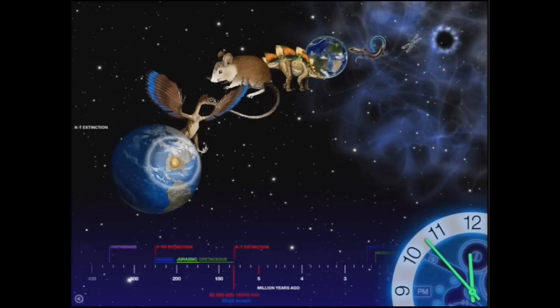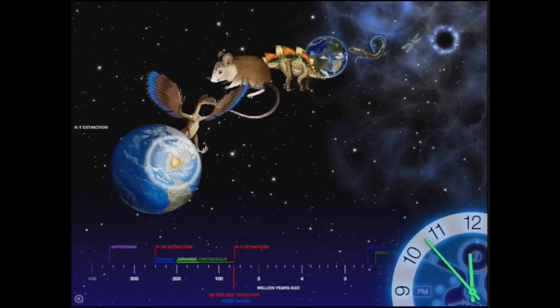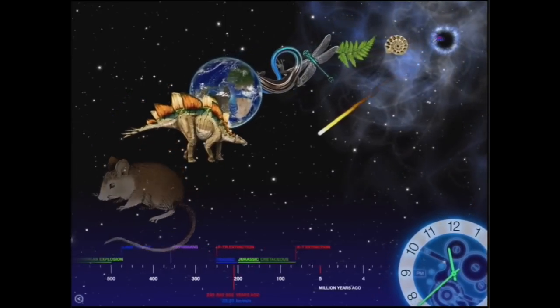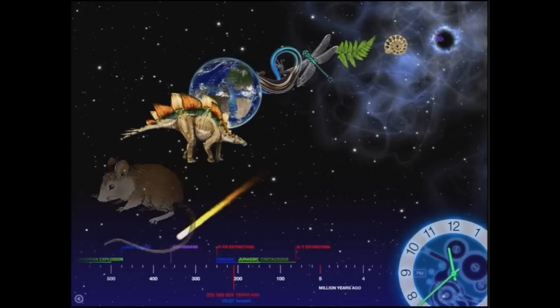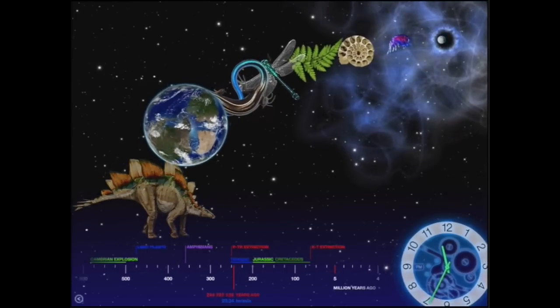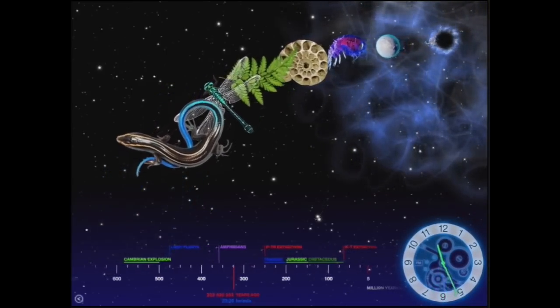So here we are 65 million years ago at 23 hours and 53 minutes on the clock. We're moving around, we're moving back. The rise of the dinosaurs - can you see the clock down there? We're going backwards through the clock at half past 11.